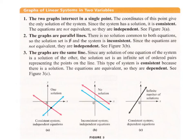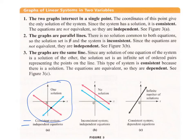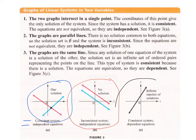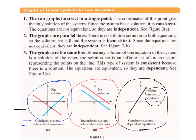When graphing systems, there are three different possibilities. First, where there's one solution — the two lines cross — we call those systems consistent and independent, because they're not exactly the same. Second, two parallel lines give an inconsistent system with independent equations and no solution. Third, if the two lines are exactly the same, it's a consistent system with dependent equations and an infinite number of solutions.